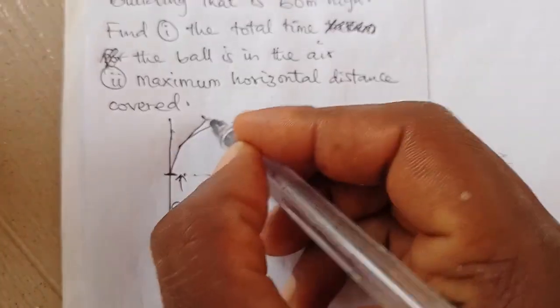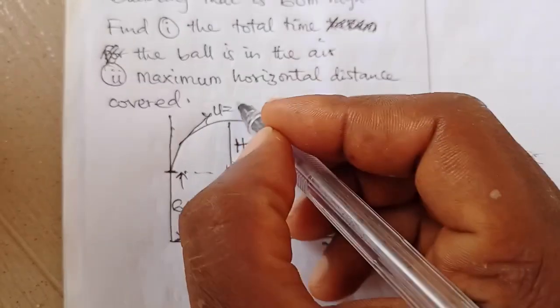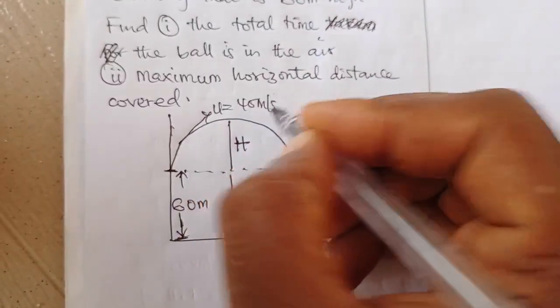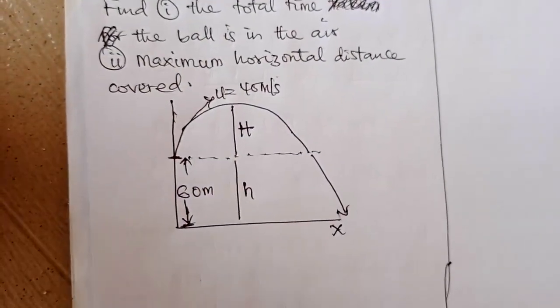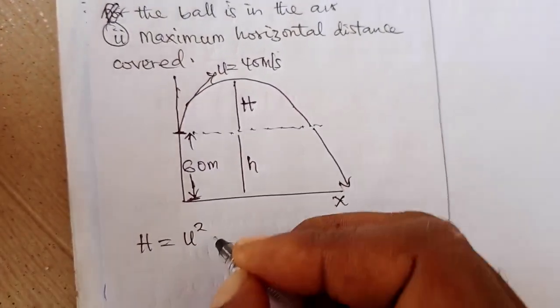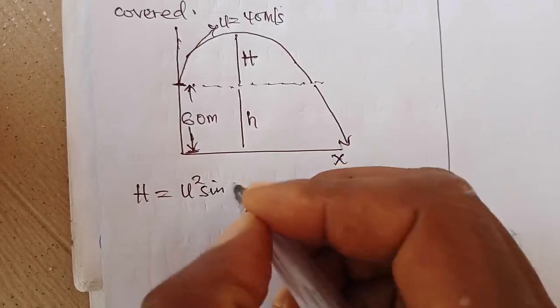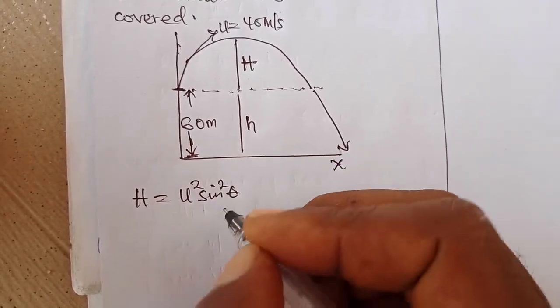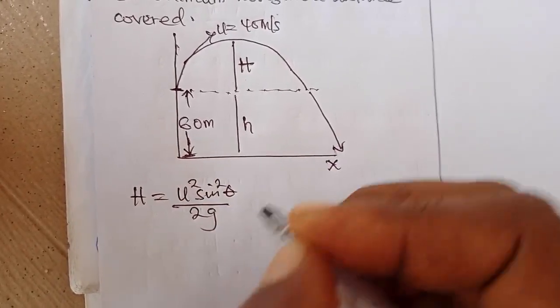And it was moving with initial velocity u, which they told us is 40 meters per second. Now what we need to know is that h is given as u squared sine squared theta over 2g.